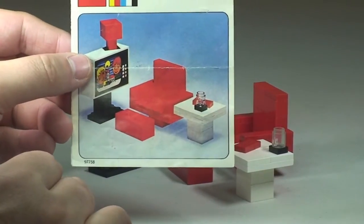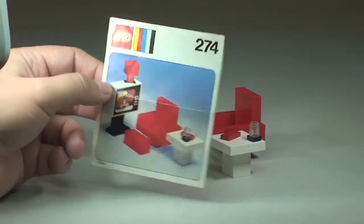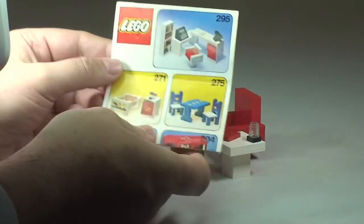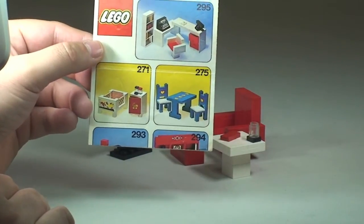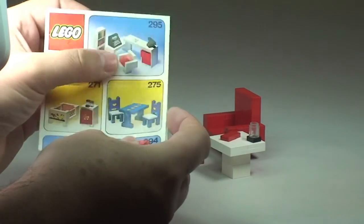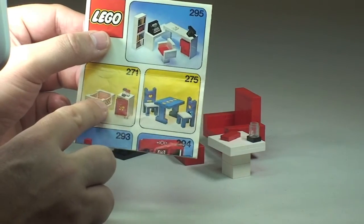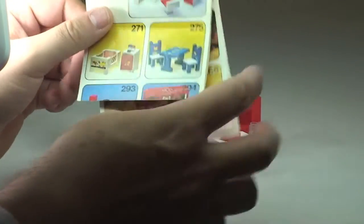Just finally a quick look at the instructions. So you quickly saw those at the beginning of the video. That's the front of the instruction cover there. Over to the rear you can see some other sets from this particular theme. So some pretty cool little sets actually. We've got an office setup there. There's a cot. There's a dining room table, etc.